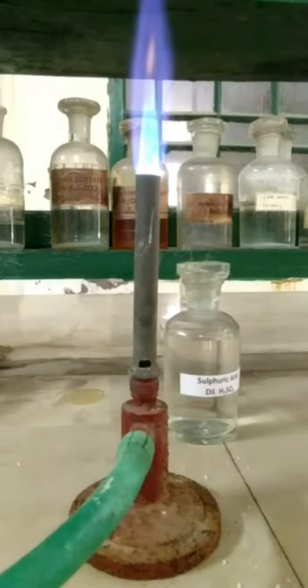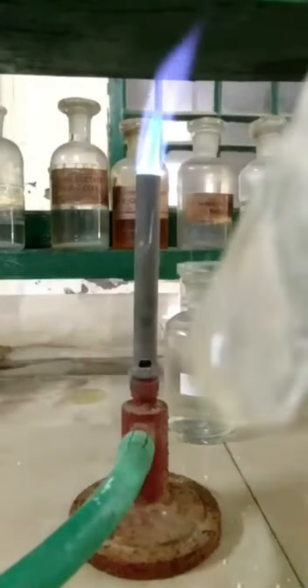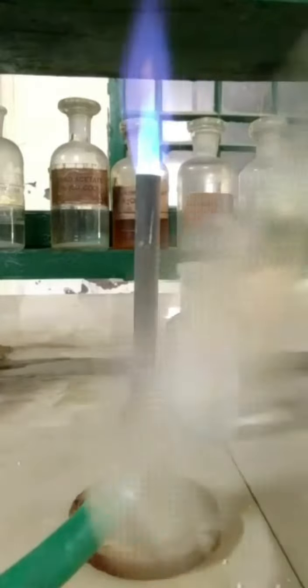Let us analyze the given salt for the presence of second group cation. Take a pinch of salt in a clean test tube and add distilled water to prepare an aqueous solution of the salt.